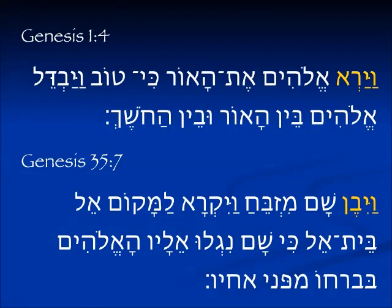Another example: Genesis 35:7, vayiven sham mizbeach. This is from the verb bana, to build. Normally 'he will build' is yivneh, but that ends in He. So when the reversing vav comes before it, it is reduced to vayiven.